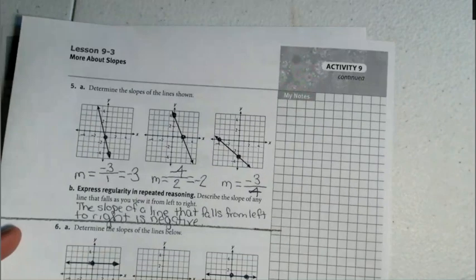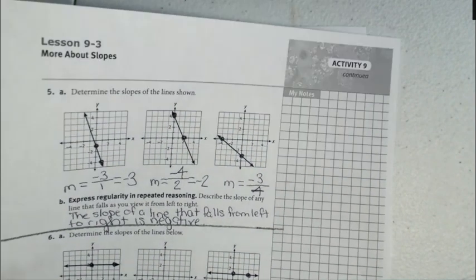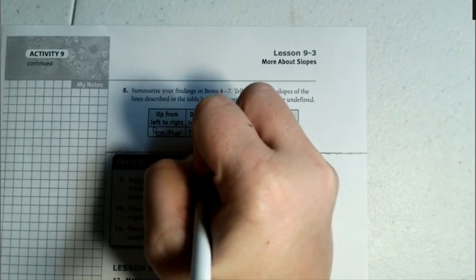Looking at question number five. As we fall from left to right or go down, that is going to be a negative slope.